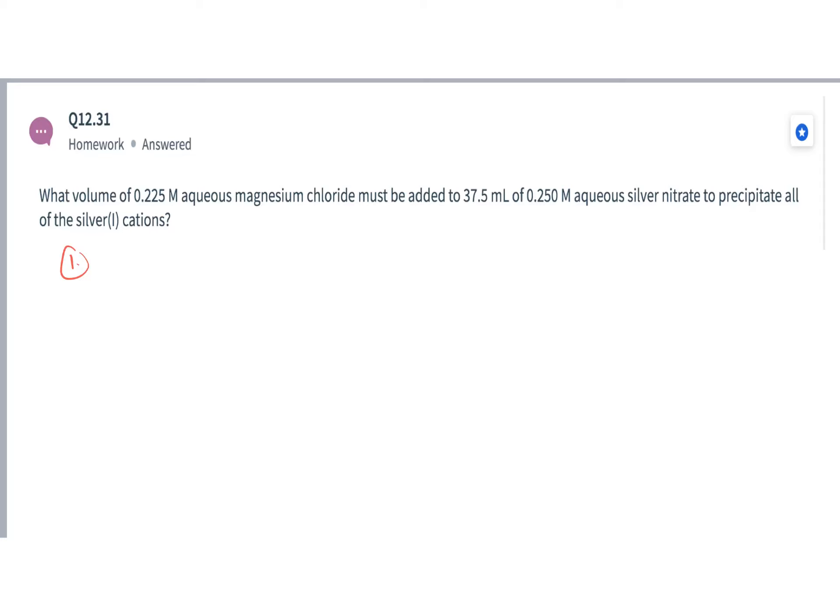I've got a 0.225 molar solution of magnesium chloride added to an aqueous solution of silver nitrate. How much of that magnesium chloride do I have to add to precipitate all the silver cations?